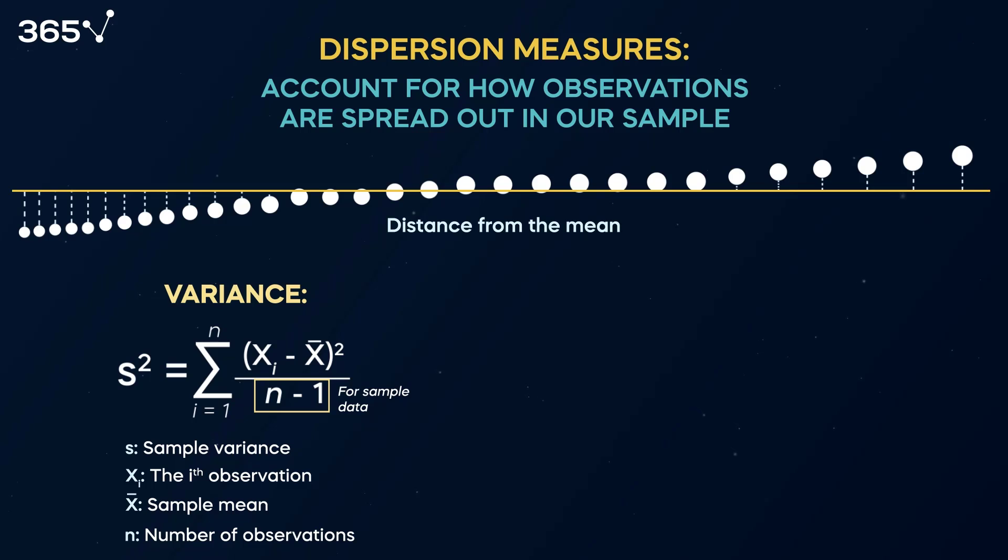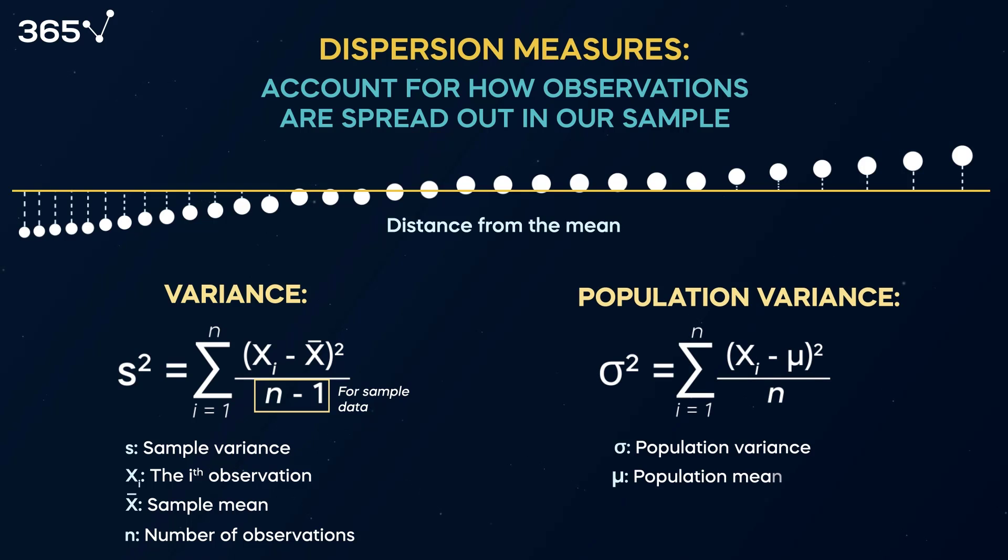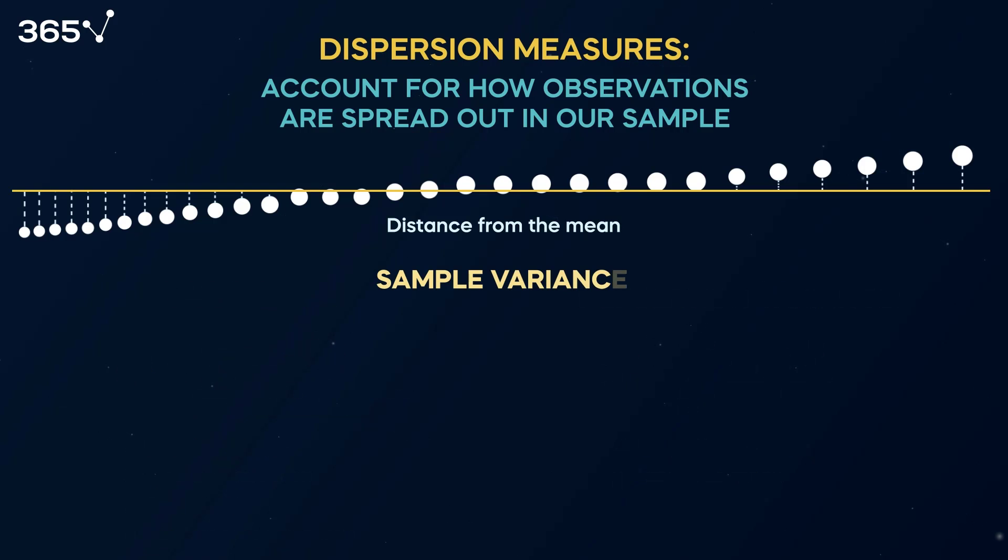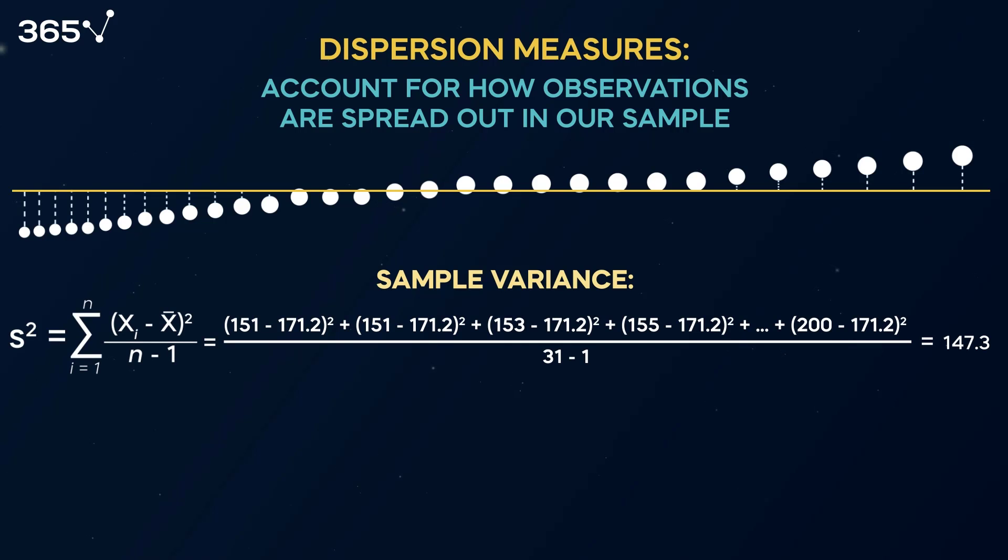Please remember that, depending on whether we work with population or sample data, we'll need slightly different formulas. Here's the variance formula when working with population data. Sample variance allows us to understand how data is spread out with respect to the sample mean. Once we have calculated the sample variance, we can quickly obtain the sample standard deviation, given by the square root of the variance.